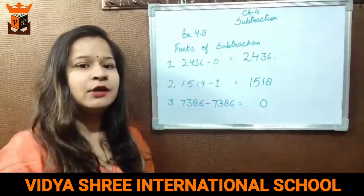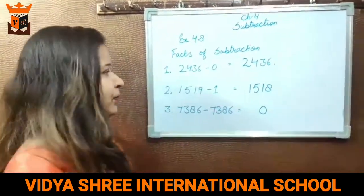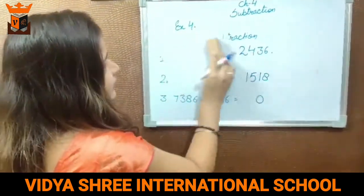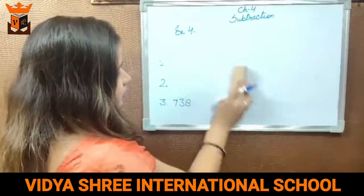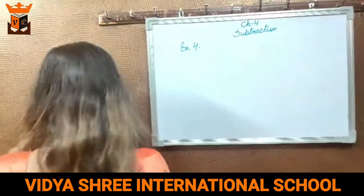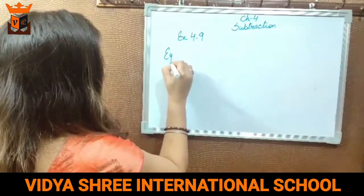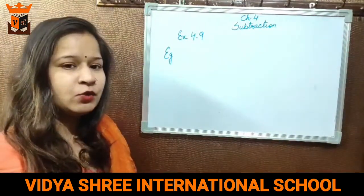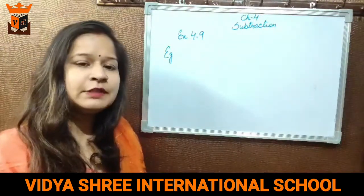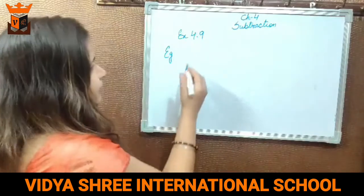Your exercise 4.8 is just based on these facts, so do these exercises in your book only. Now, next exercise is exercise 4.9. In exercise 4.9, we have to see that in one question, we have to do two operations — addition and subtraction. Aapko 4-4 digit ki numbers di hoi hain. Aur same question mein aapko addition bhi karna hai aur subtraction bhi karna hai. We will see what we have to do first — addition or subtraction. Let us take an example.